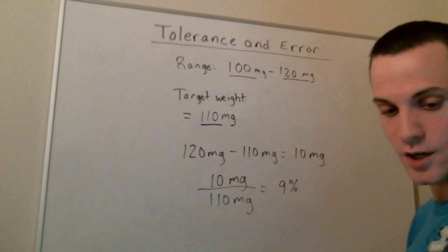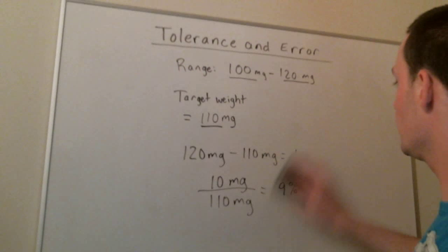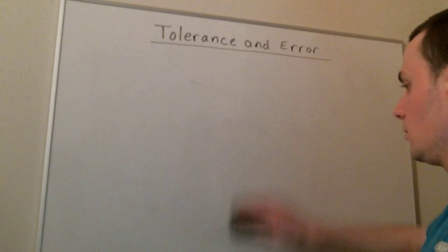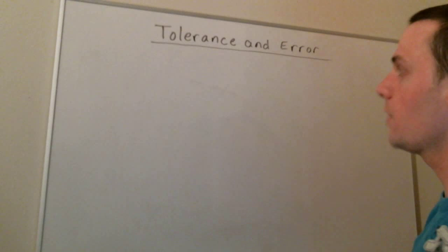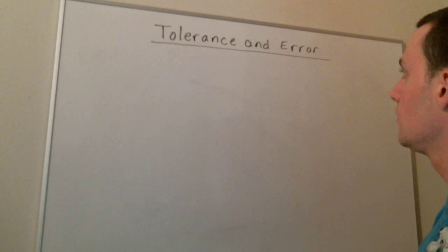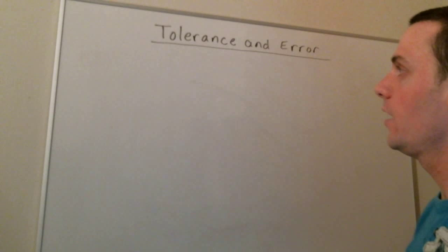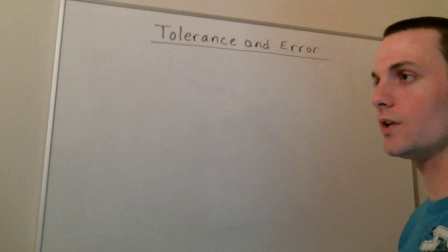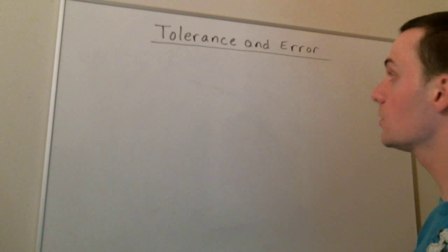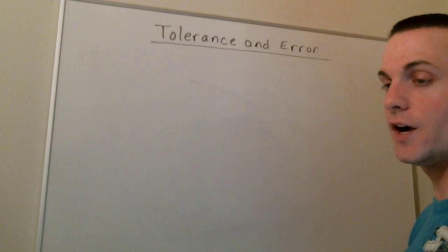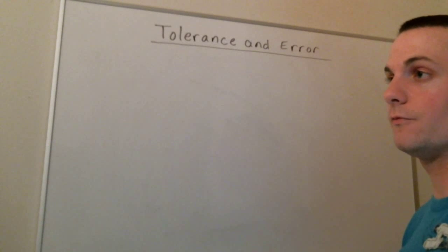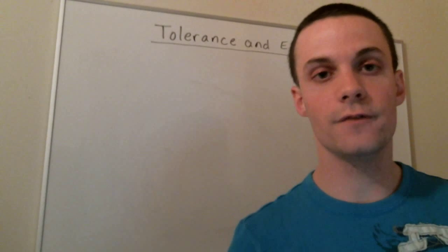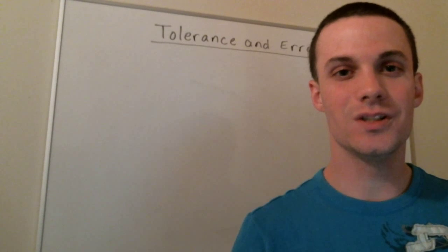Hopefully this helps you with calculations of acceptable tolerance in your measurement of weight and helps you find percent error. As another note, you can also apply this to volumes, not just to weight. If you're measuring out something in milliliters, you can apply the same principles — finding a target volume, finding a range of volume, and finding a percent error for acceptable volumes to dispense to your patients.